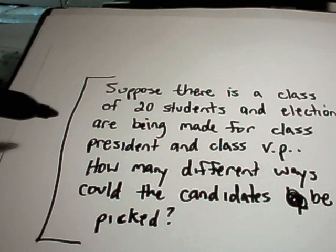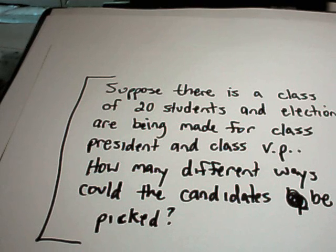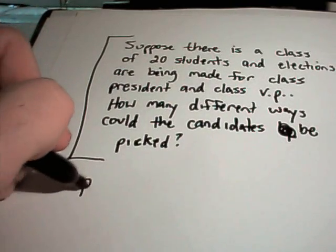So again, here we're sampling without replacement because if you get picked for president, you can't also be vice president. You have to be one or the other. So we're sampling without replacement. And here the order matters because maybe I pick president first. Well, once I pick president, the next person automatically has to be vice president. So if I'm president and you're vice president, that's a different ticket than if you're president and I'm vice president. So again, we use permutations.